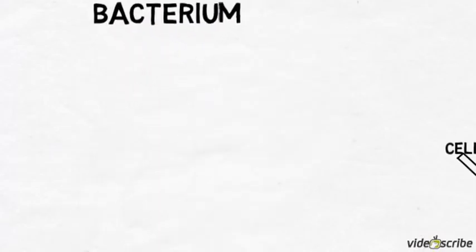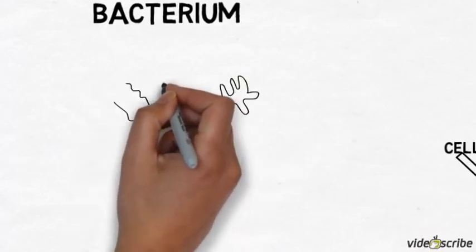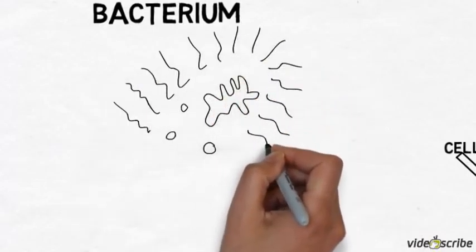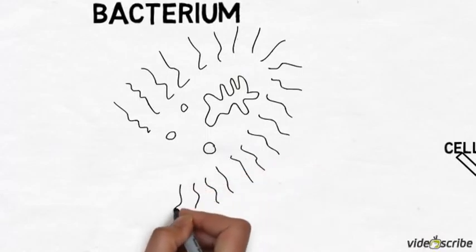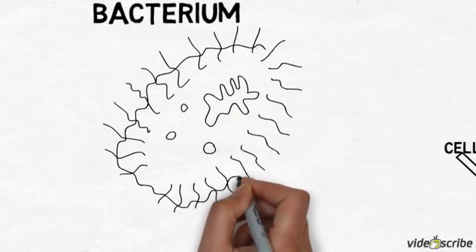The next cell we're looking at is a bacterium. The bacterium is a prokaryotic cell, which means it doesn't have a nucleus. It doesn't have any organelle with a membrane around it, so it doesn't have mitochondria or chloroplasts either.